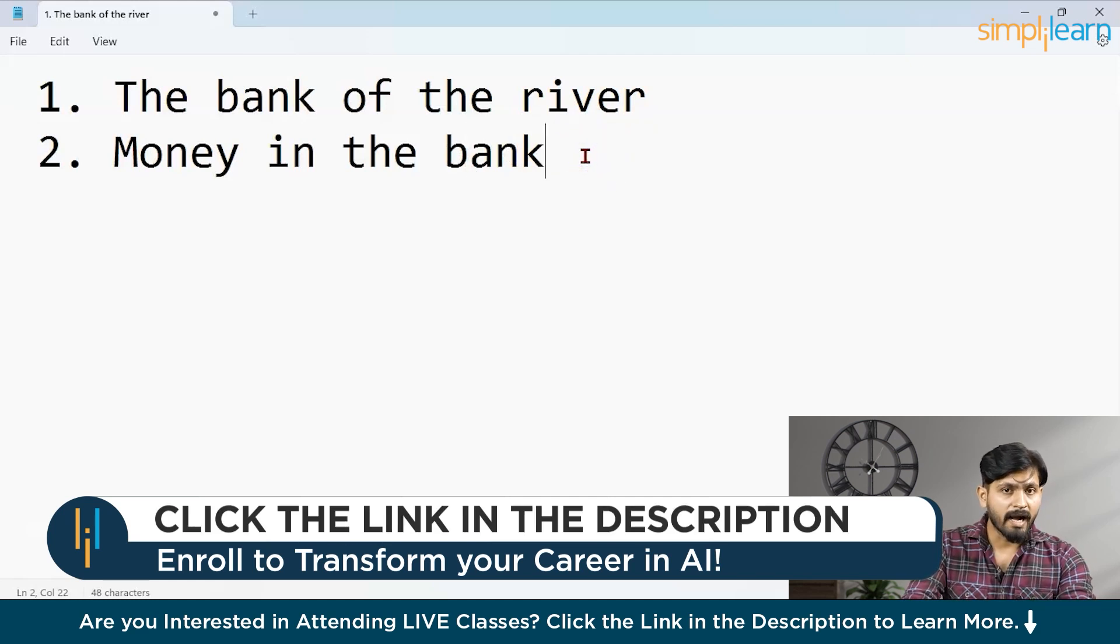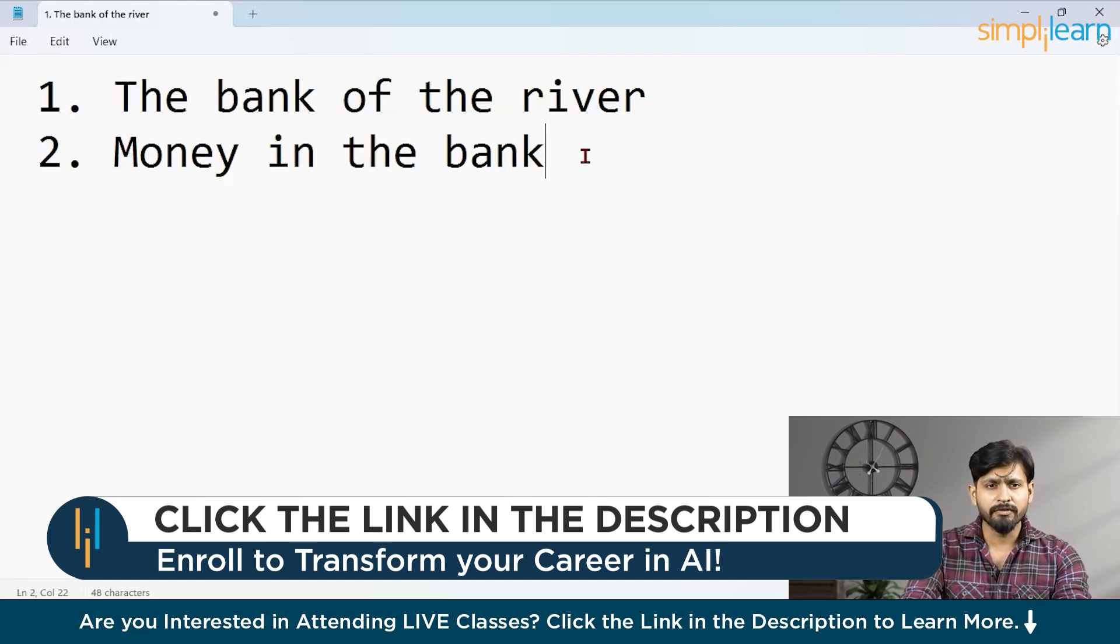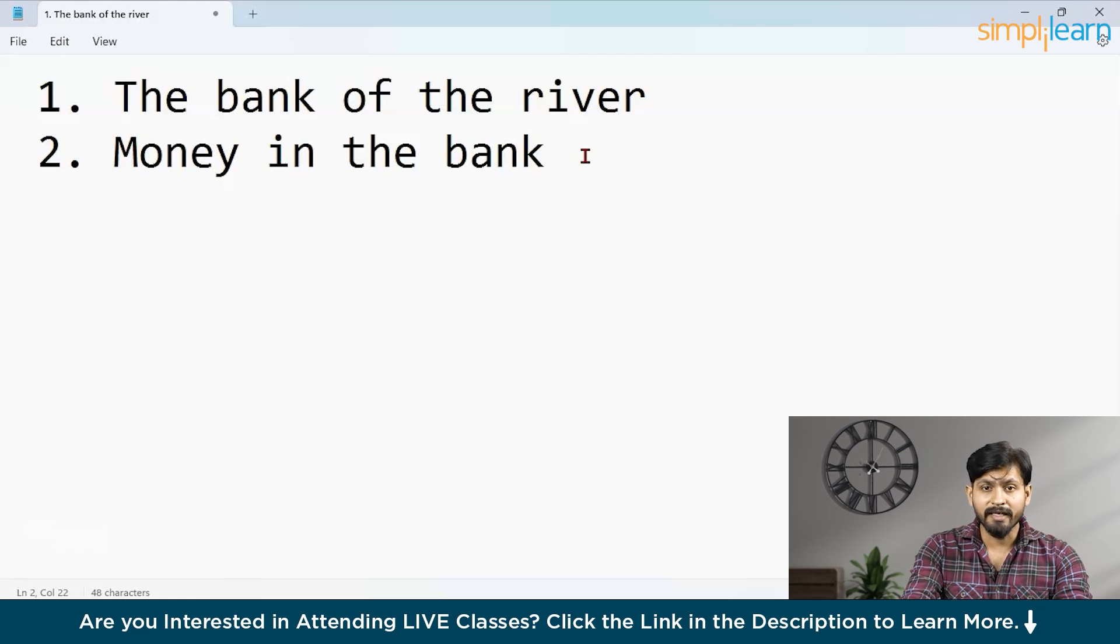And second word is money in the bank. Both the sentences contain word bank but with different meanings. In the first sentence, it refers to the land beside the river while in the second, it refers to the financial institution. The computer lacks this understanding so we need a way to inject context into it. Other words in the sentence can come to our aid. In the first sentence, the and of don't provide much of the context. Similarly, in the second sentence, money helps us to understand the context of bank as a financial institution.